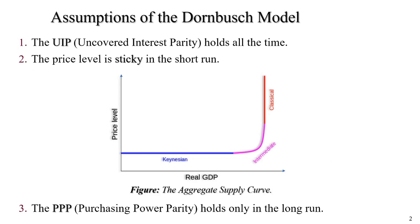Assumptions of the Dornbusch model. First assumption: the UIP, uncovered interest parity, holds all the time. Second assumption: the price level is sticky in the short-run. That means prices do not adjust quickly to changes in economic conditions.